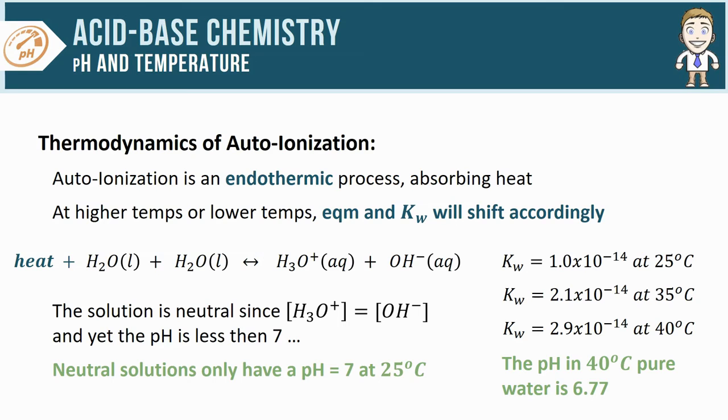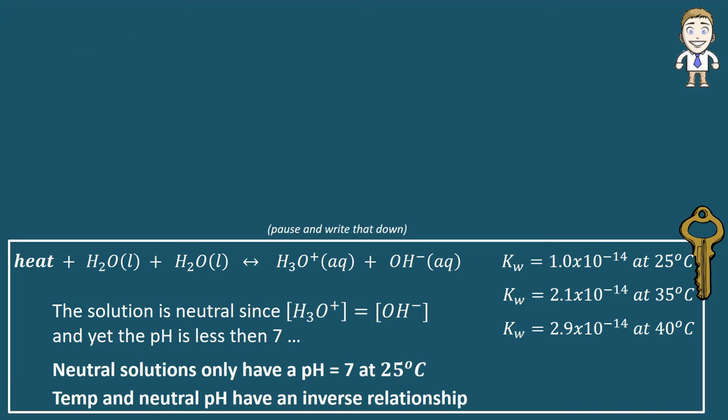One, that neutral solutions will only have a pH of exactly 7 when the temp is 25 degrees celsius, and the temperature and the neutral pH are going to have an inverse relationship. Like here at higher temps the neutral pH is dropping, and the opposite would be true at lower temperatures as well.